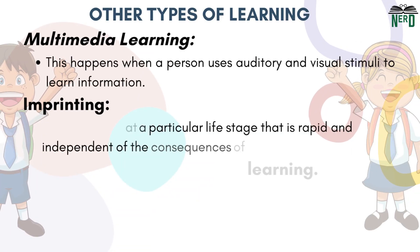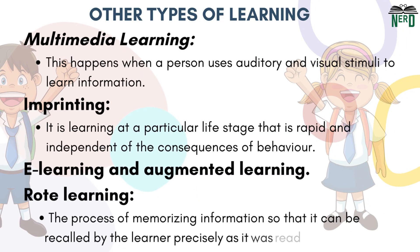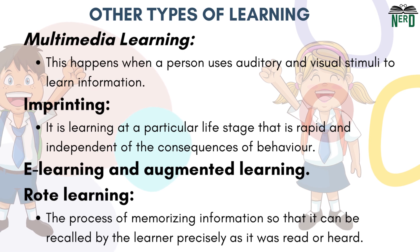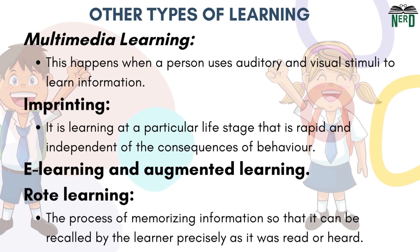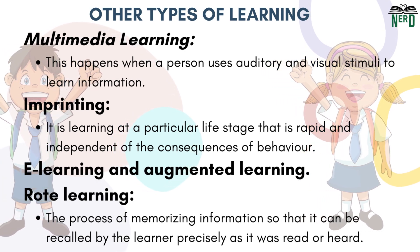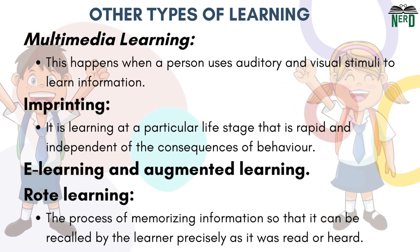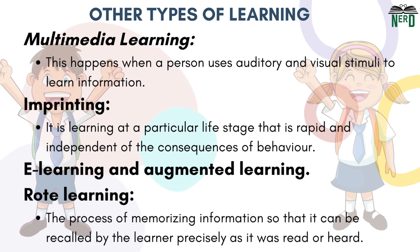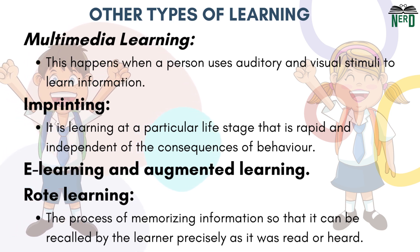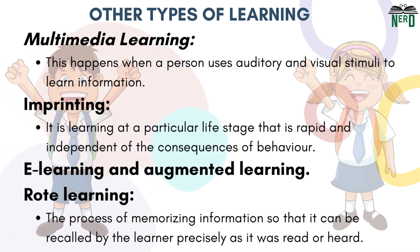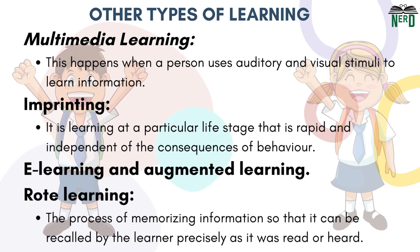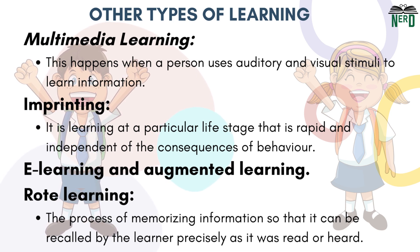Multimedia learning happens when a person uses auditory and visual stimuli to learn information. Imprinting can also be a type of learning process. It is learning at a particular life stage that is rapid and independent of the consequences of behavior.